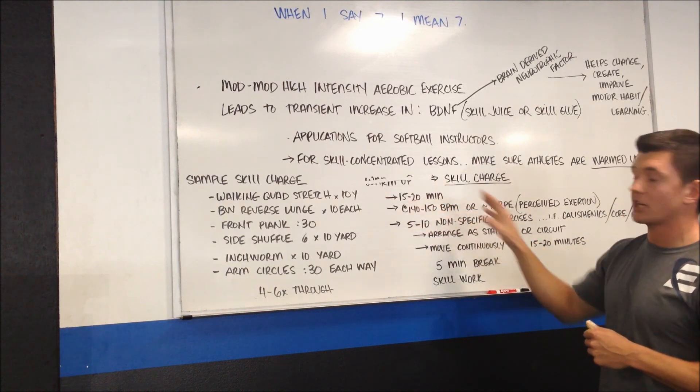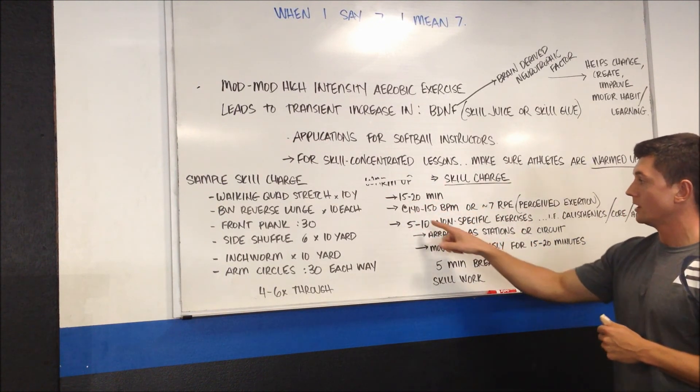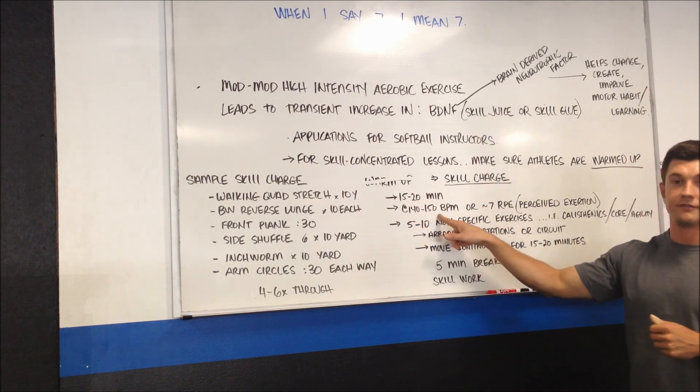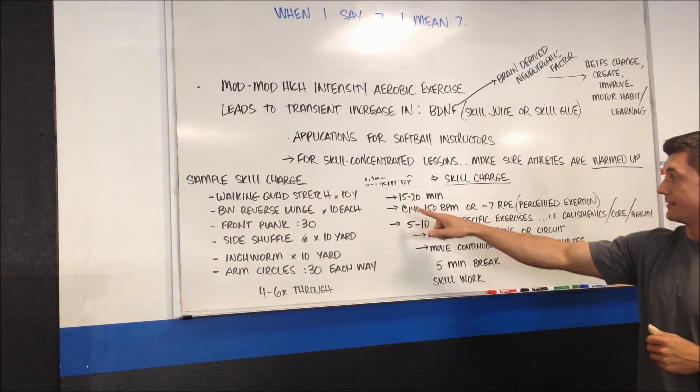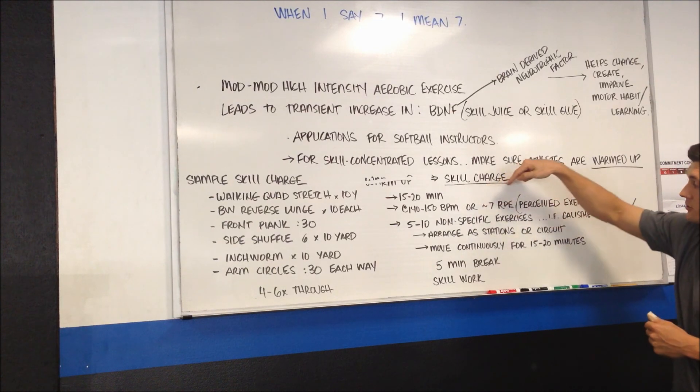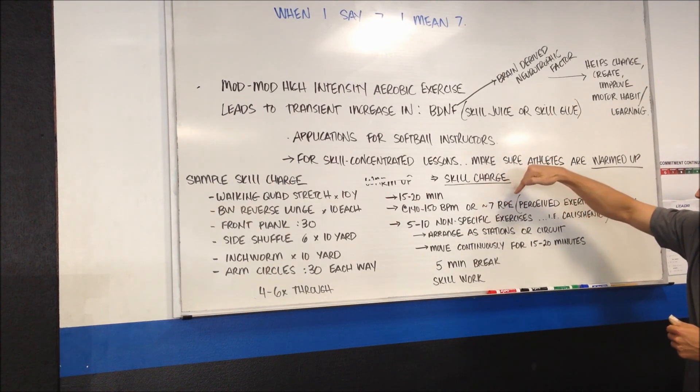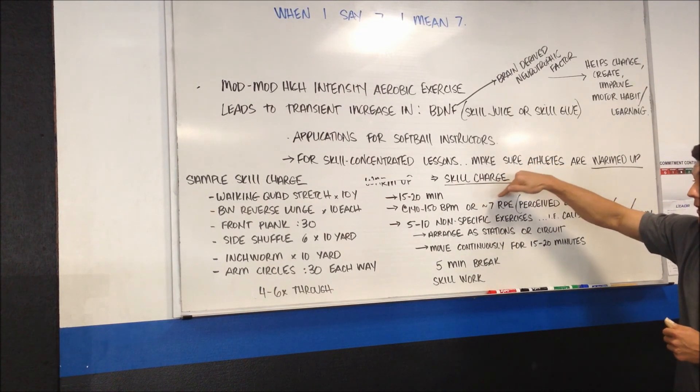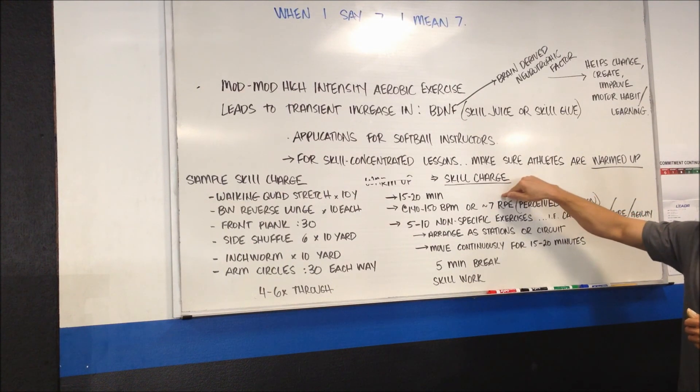Specifics: this is going to be a 15 to 20-minute workout at 140 to 150 heartbeats per minute. You don't need to worry about that. You don't have a heart rate monitor, that's more for fitness professionals. What you need to know is that they should be working at about a 7 out of 10 level of perceived exertion.